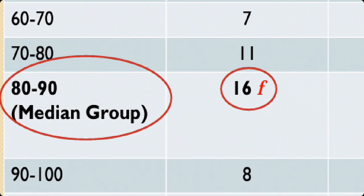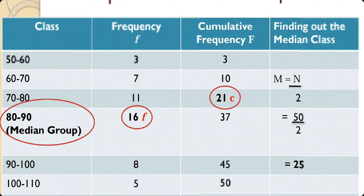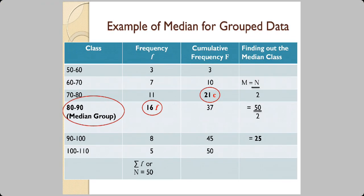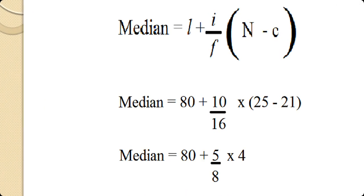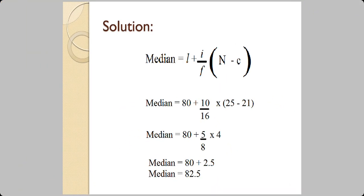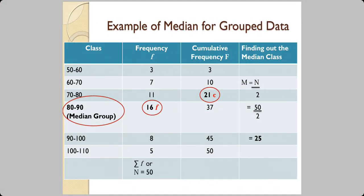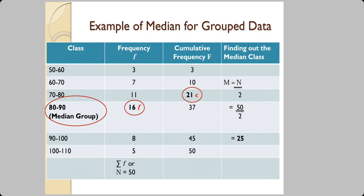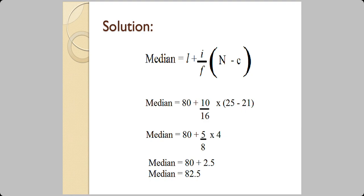Substituting into the formula: L = 80, i = 10, f = 16, n/2 = 25, and c = 21. So Median = 80 + (10/16) × (25 − 21) = 80 + (10/16) × 4 = 82.5. Therefore the median is 82.5.